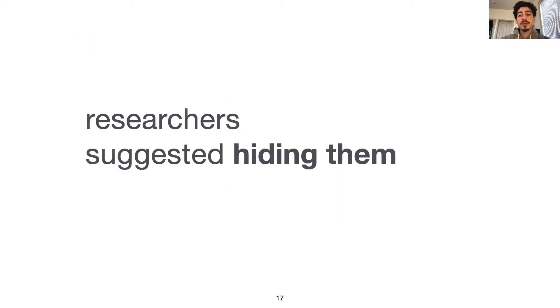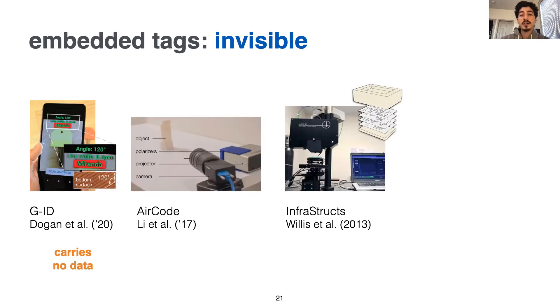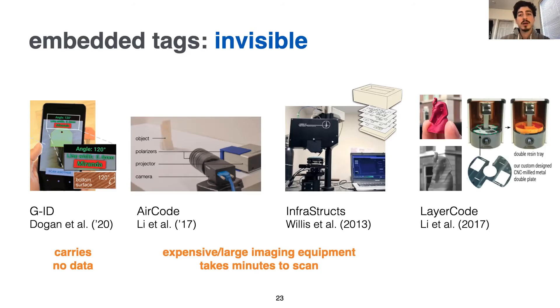So researchers then came up with new techniques to hide the tags. One piece of work I showed at CHI 2020 is GID, which uses the unobtrusive surface artifacts that appear due to the 3D printing process to identify the object. However, these tags are only used for identification and do not store any data. InfraStruct and InfraredTags were pioneers in showing how invisible data bits can be embedded as air gaps within the object surface. However, these tags are decoded using expensive or large imaging tools, which also require scanning times on the order of minutes. Infrared-based layer codes have barcodes that can be imaged using cheap cameras. However, they require the hardware and the software of the SLA printer to be modified.